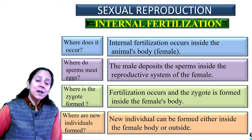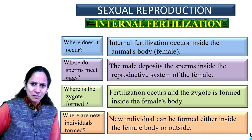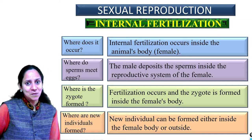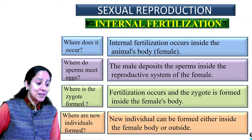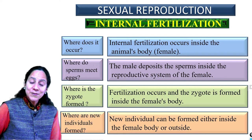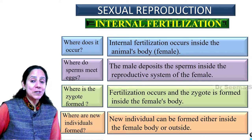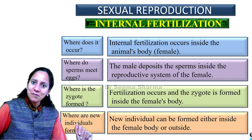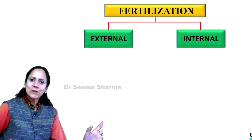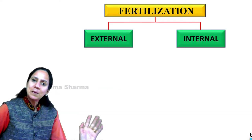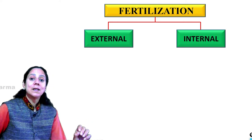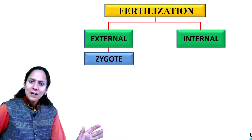The new individual developing in the fertilized egg can form either inside or outside the female's body — giving us two options. To summarize: if fertilization takes place outside the animal's body, it is external fertilization. If it takes place inside the female's reproductive system, it is internal fertilization. In external fertilization, the zygote, embryo, and new organism all develop in the outside environment.